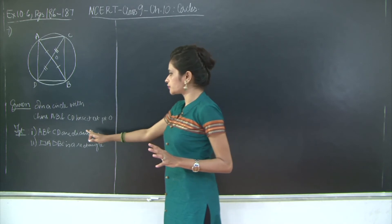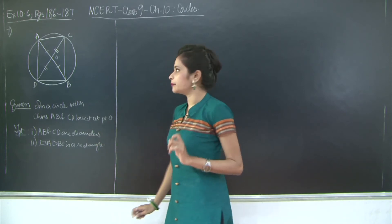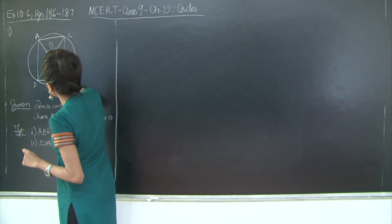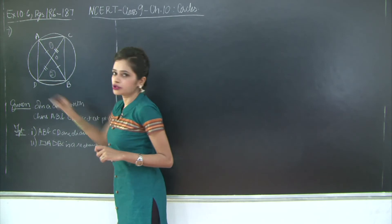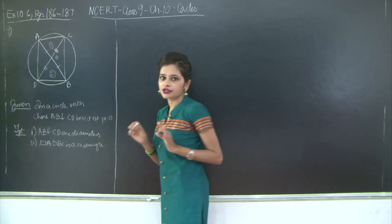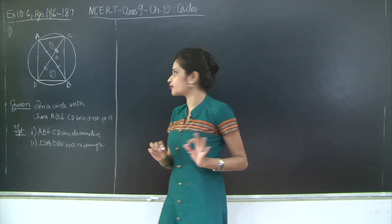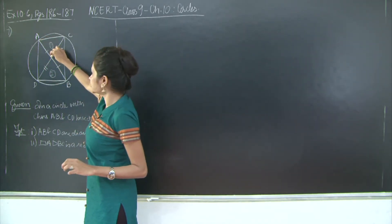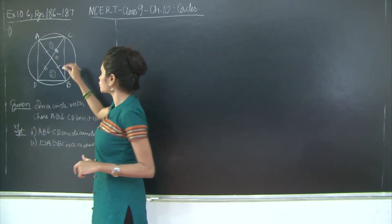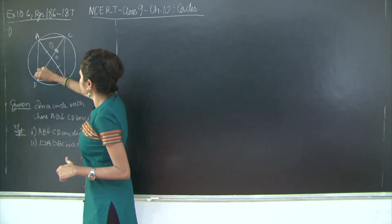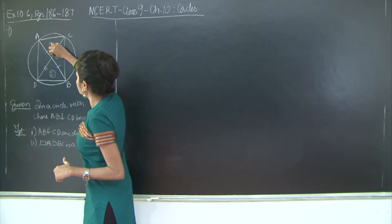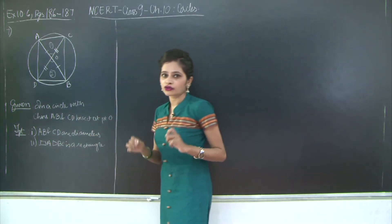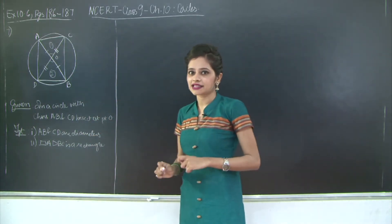Let's first prove that AB and CD are the diameters of the circle. If you notice triangles AOC and BOD, you will find they are congruent to each other by the Side Angle Side test of congruence. We have AO equal to BO because O is the midpoint since the chords bisect each other at O. Similarly CO is equal to DO, and angle AOC equals angle BOD as vertically opposite angles.